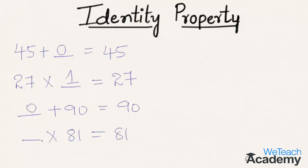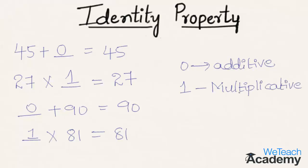In the final example, seeing the multiplication sign, we use the multiplicative identity: 1 × 81 = 81. To conclude, 0 is the additive identity and 1 is the multiplicative identity. This was the basic introduction to identity property. Hope you understood the concept. Do like and subscribe to VTCH Academy. Thanks for watching, and have a nice day.